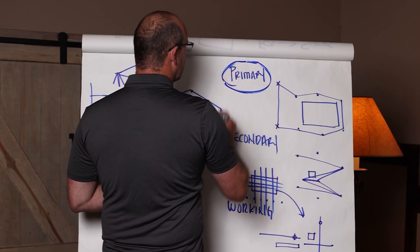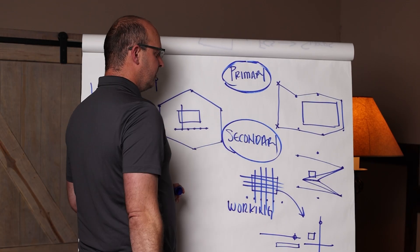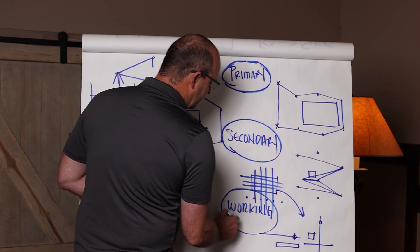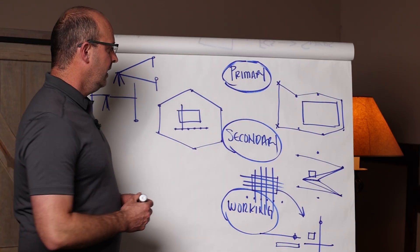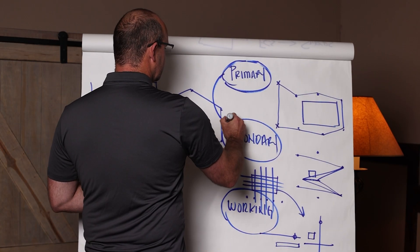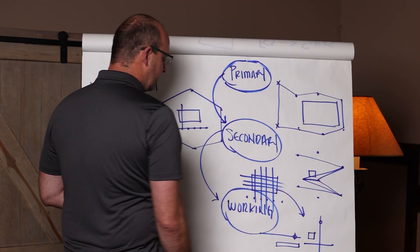So primary surrounds the job site and is permanent. Secondary surrounds the building and is semi-permanent. Working is temporary and it's for the component. So a field engineer uses these to get the components on the right spot.